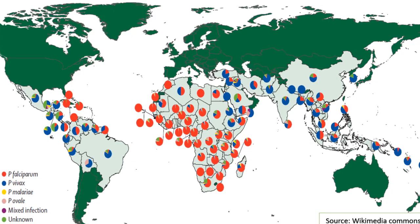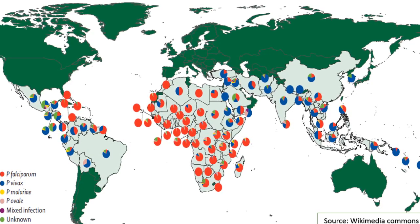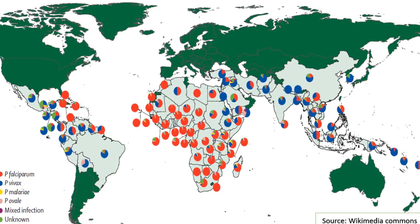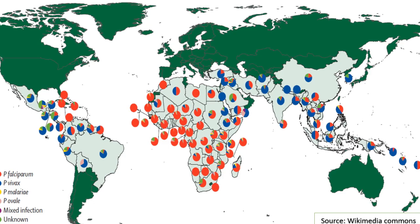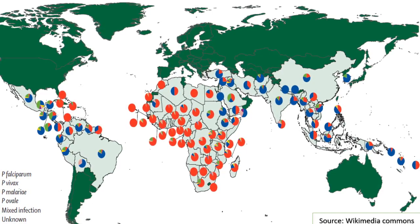Number 7. Who is at risk of malaria? People living in or traveling to malaria-endemic regions, particularly in sub-Saharan Africa, South Asia, and Southeast Asia, are at the highest risk. Vulnerable groups include young children, pregnant women, and individuals with weakened immune systems, as they are more likely to experience severe malaria.